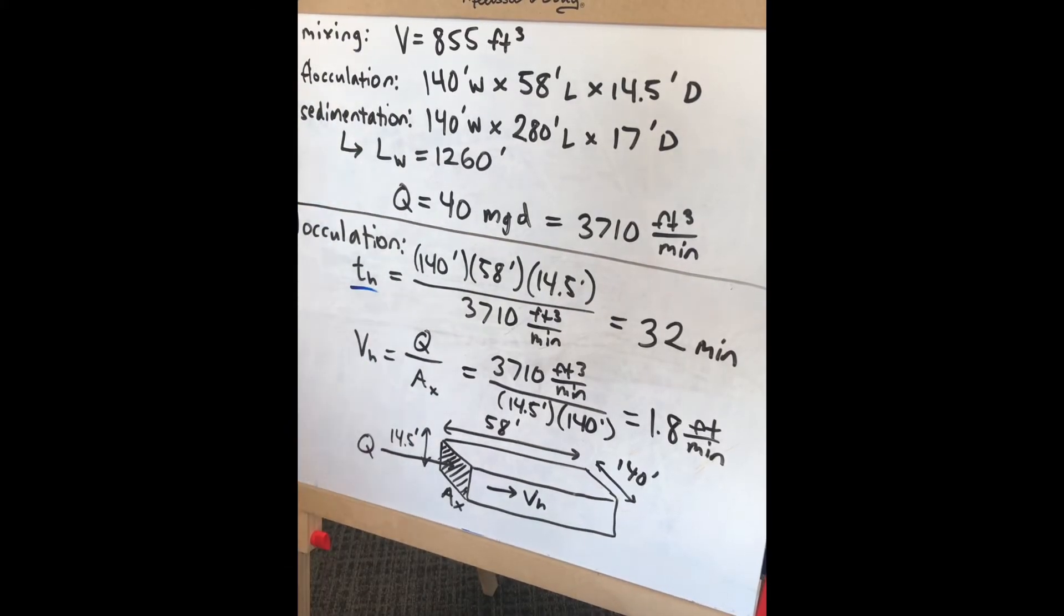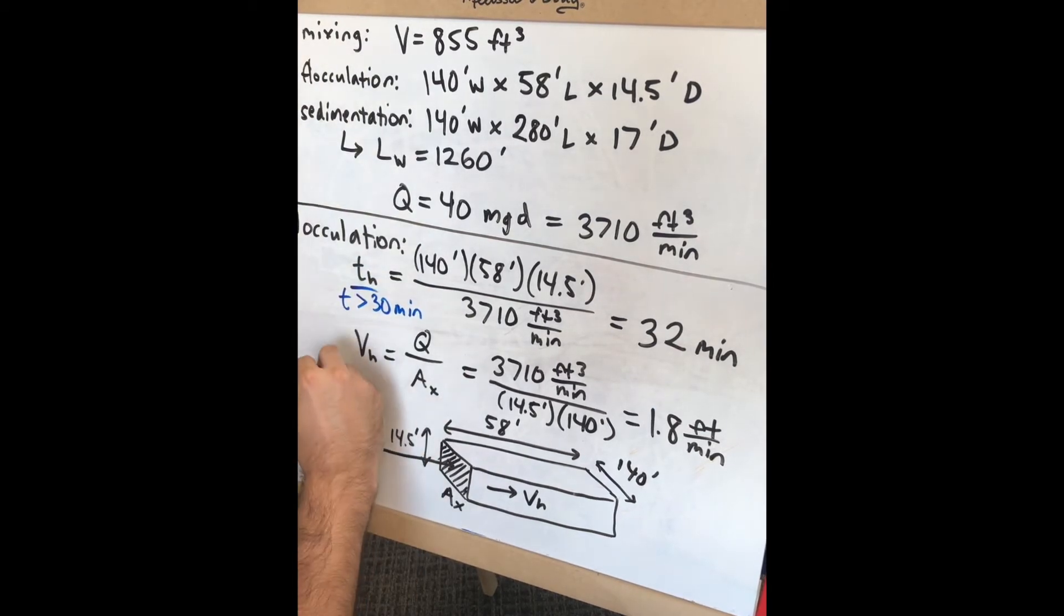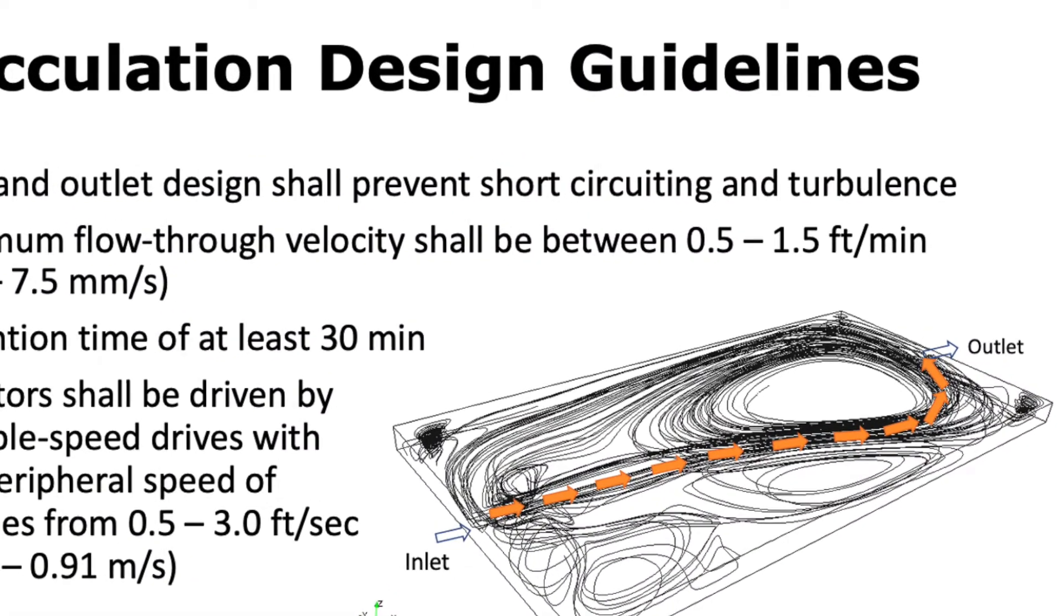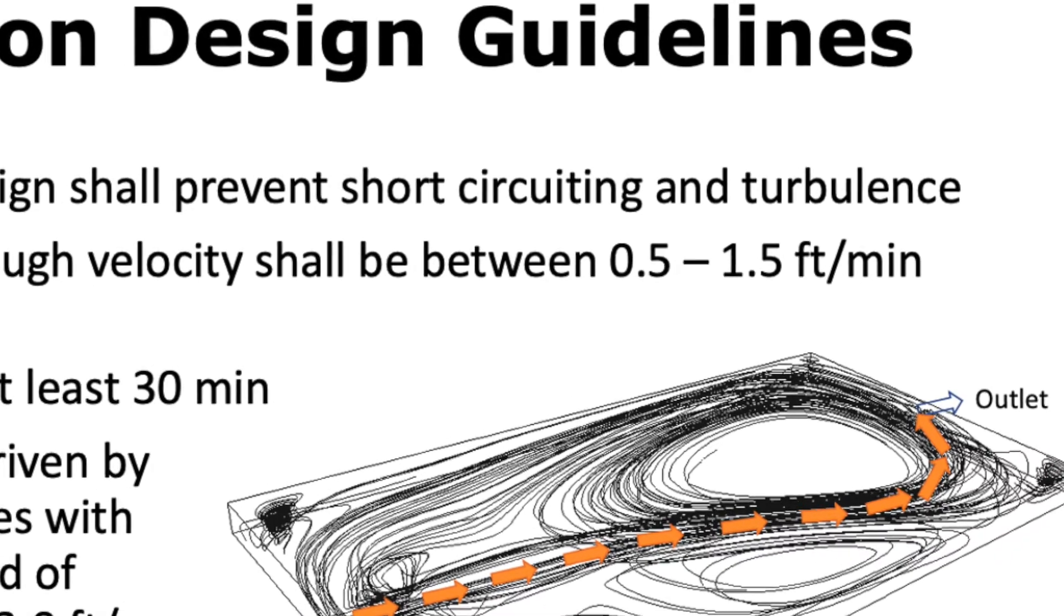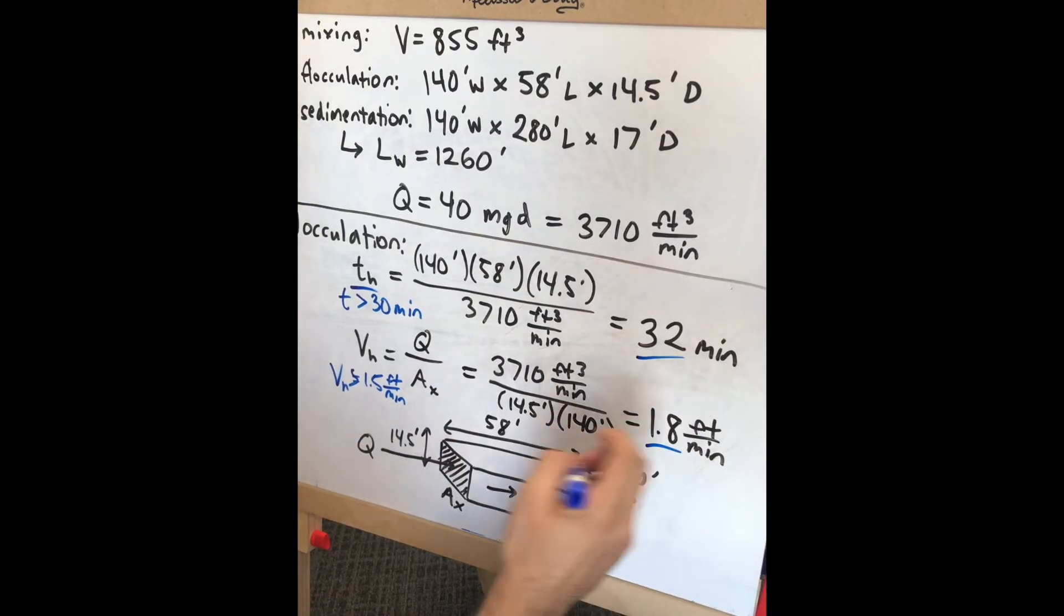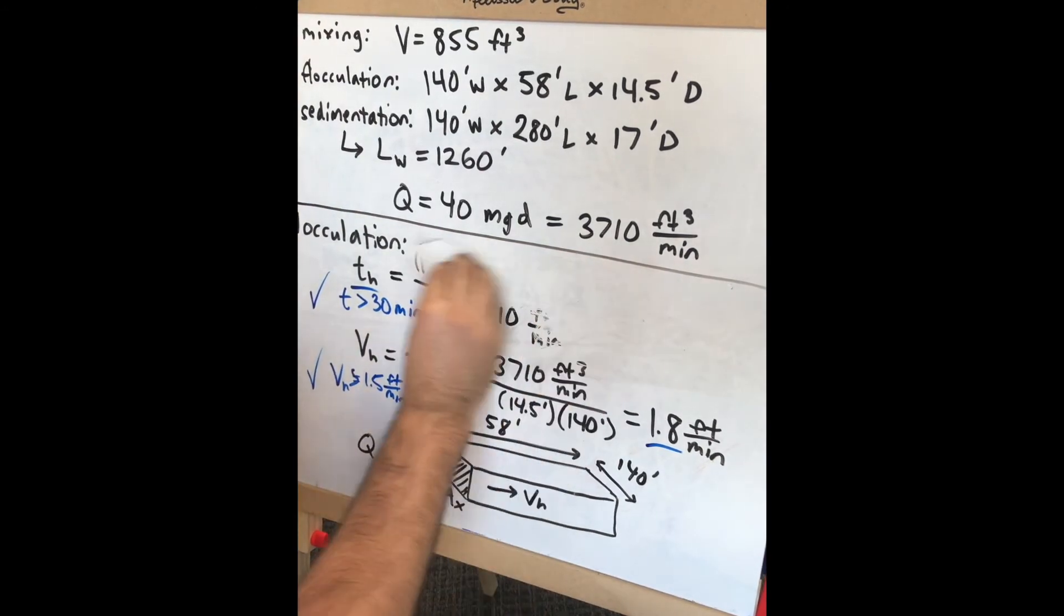The design criteria specify retention time should exceed 30 minutes and horizontal flow velocity should be between 0.5 and 1.5 feet per minute. Our retention time is acceptable, but the horizontal flow velocity of 1.8 feet per minute is too fast.